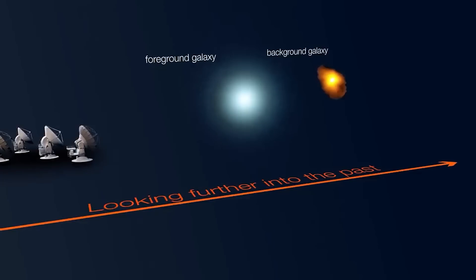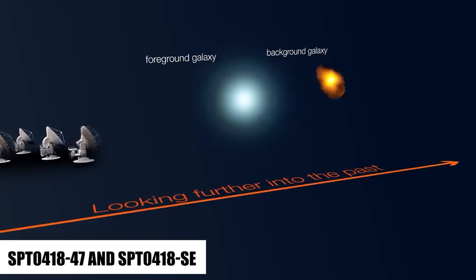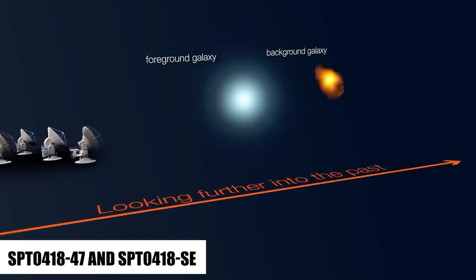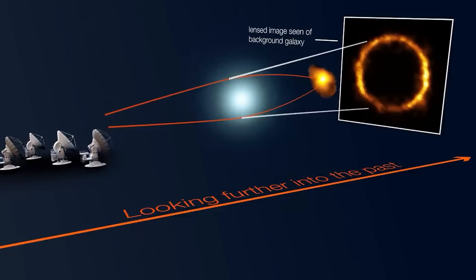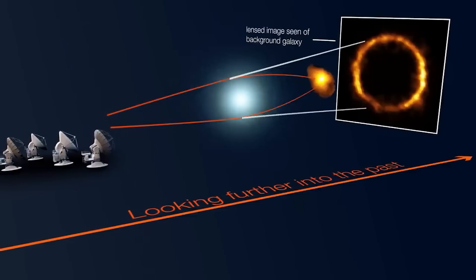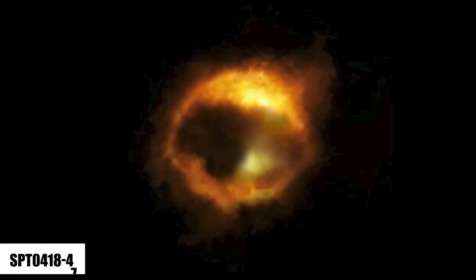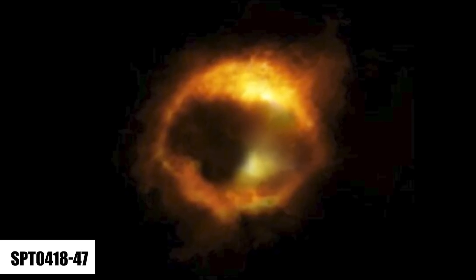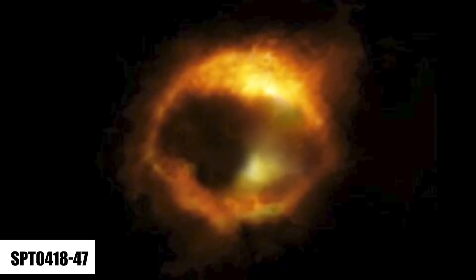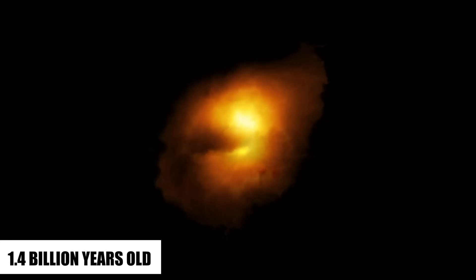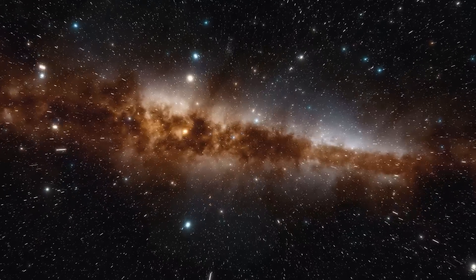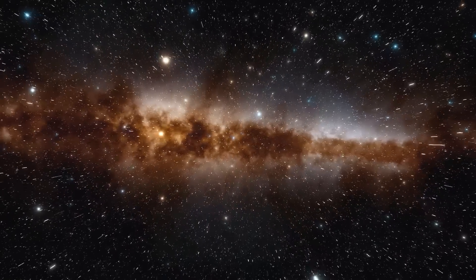Due to the fact that SPT-0418-47 and SPT-0418-SE are so close to one another, it seems likely that they may eventually interact with one another or possibly merge into one another. Given that SPT-0418-47 is believed to have formed when the universe was only 1.4 billion years old, this galactic pair could, in turn, shed light on how early galaxies evolved into larger ones.